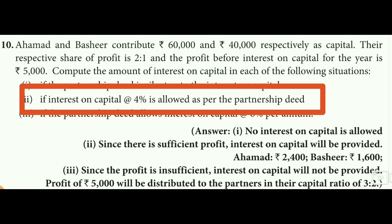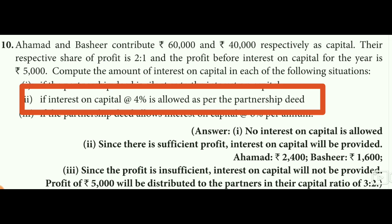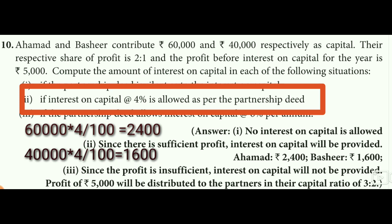Situation two: interest on capital at 4% is allowed as per the partnership deed. So Agamath with capital 60,000 at 4% gets 2,400. Bajir with capital 40,000 at 4% gets 1,600. Total interest on capital is 4,000.